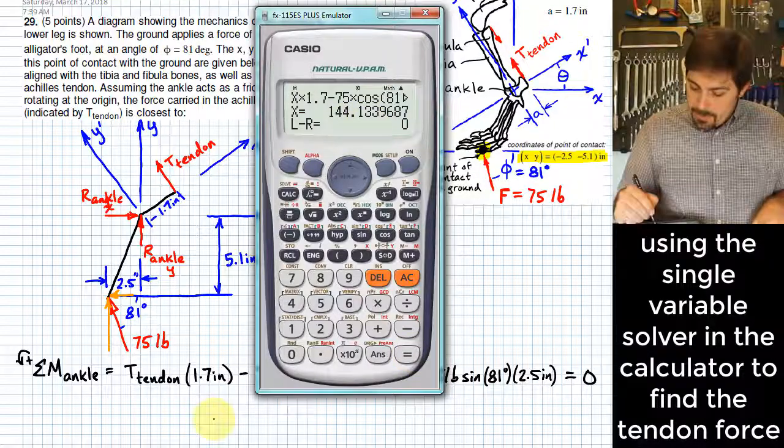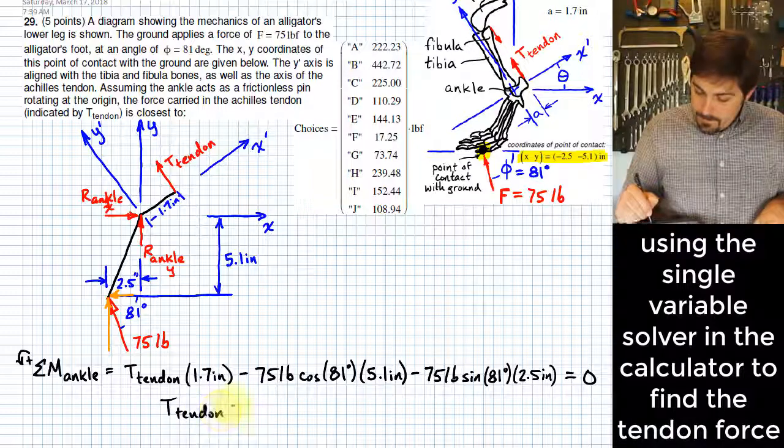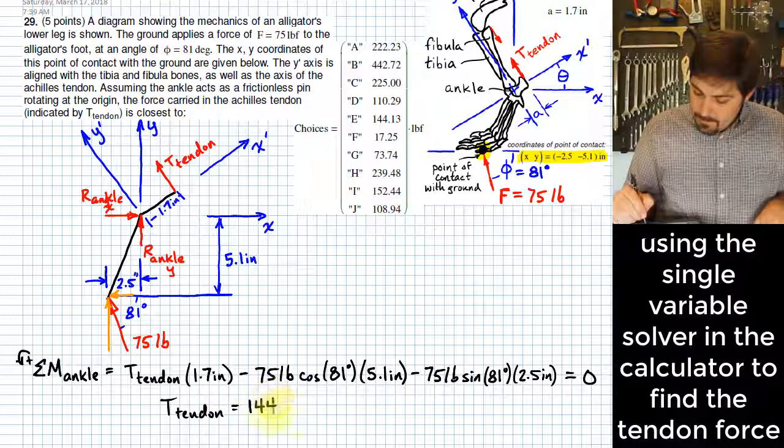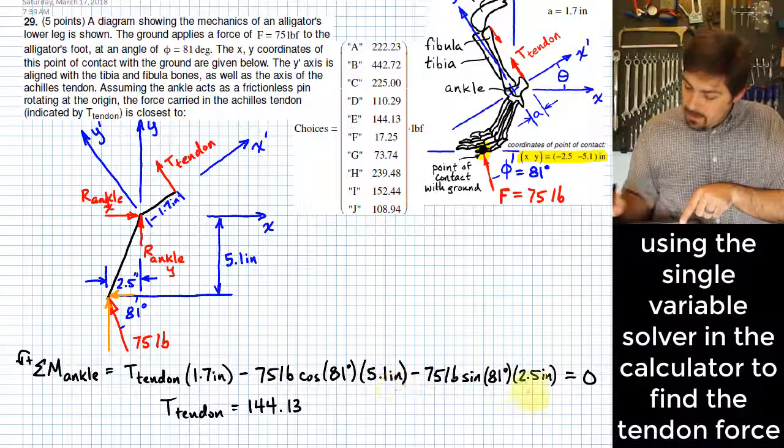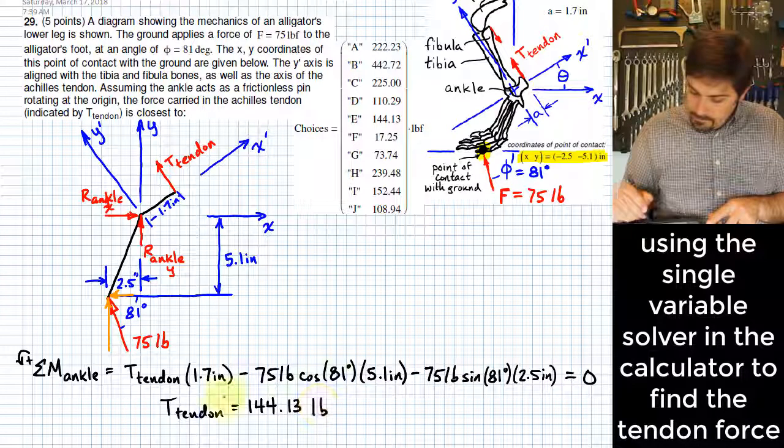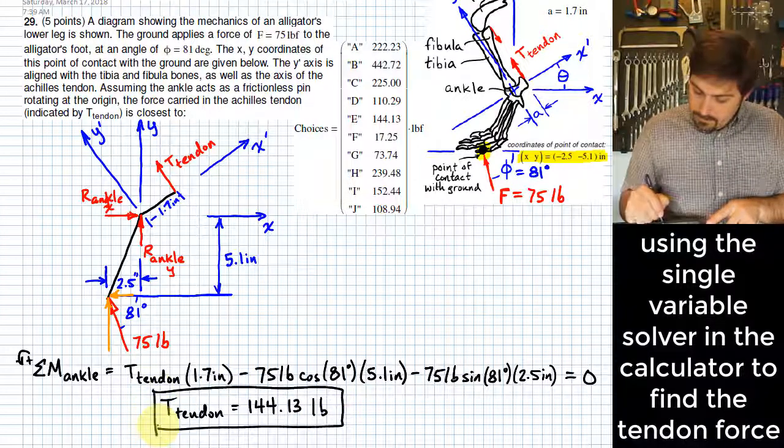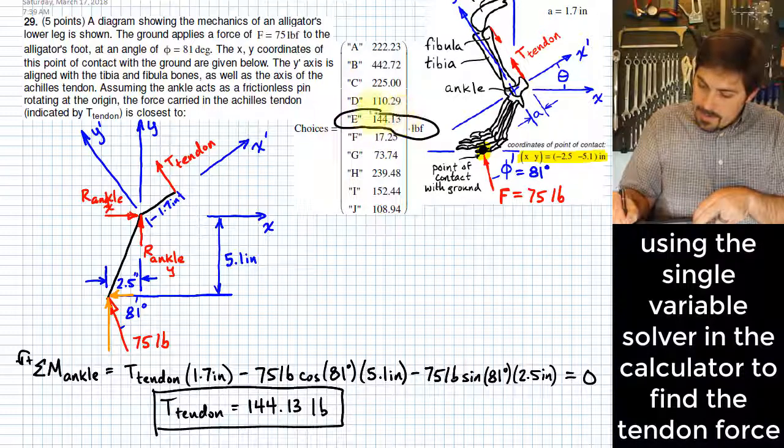And what it gives us is an answer for the T in the tendon: 144.13. The units on that would be pounds because that's what I have for my force basis here. And so I choose E in these answers.